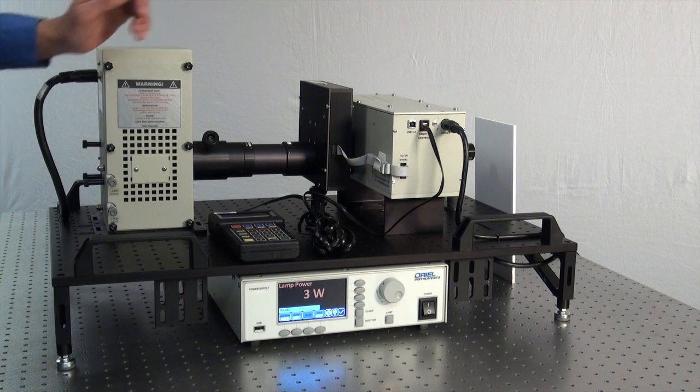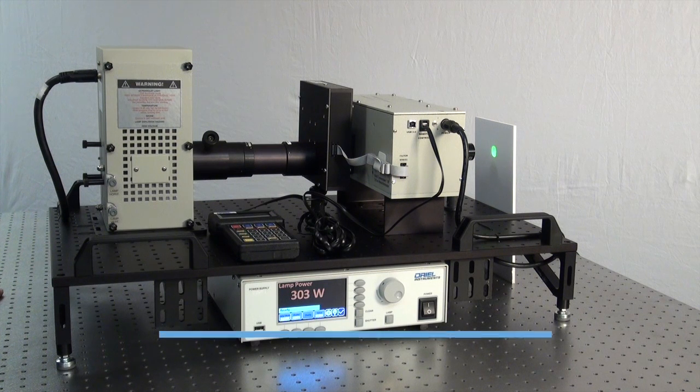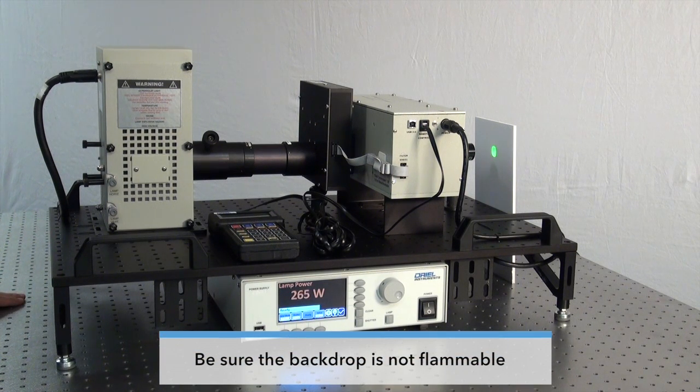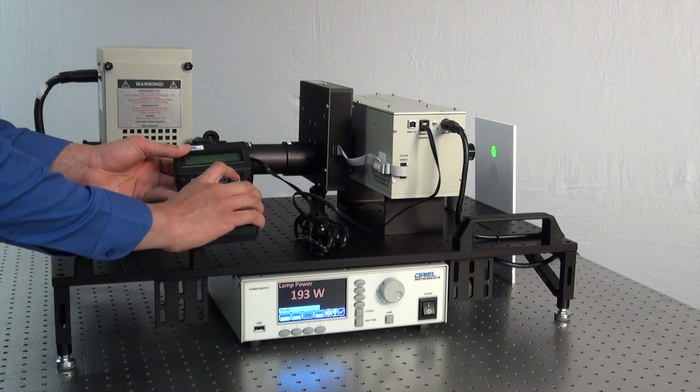It also helps to have a white or black sheet of paper to serve as a backdrop a few inches away from the light source so you can see the output of the light source. And it helps to set your monochromator to zero to keep a white light output.